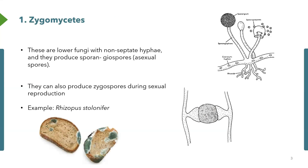We'll first look at zygomycetes, basically regarded as a lower level kind of fungi because of a lack of septa on the hyphae. These ones normally produce what we call sporangiospores, and they are found in a sac called a sporangium. These sporangia are produced in the asexual stage.